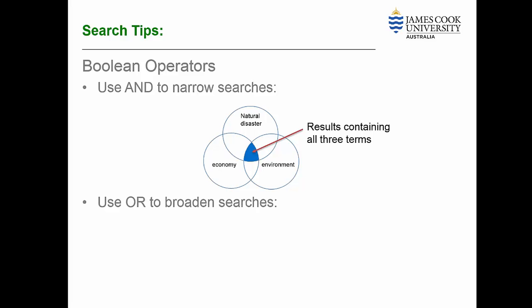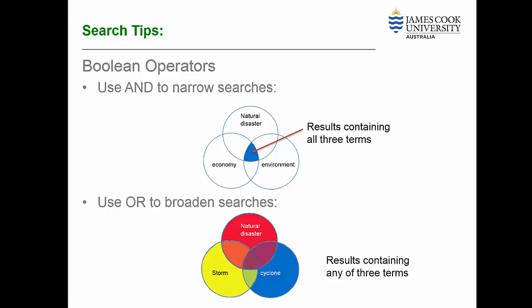The other Boolean expression to use is OR. OR broadens the searches by finding records that contain any or all of the words specified. For example, natural disasters OR cyclones OR storms. This is good to use for synonyms or related terms. And you must type in the word OR if you want to find any of those terms.